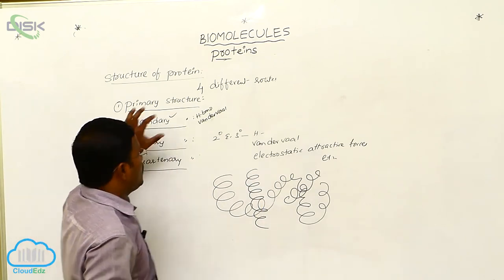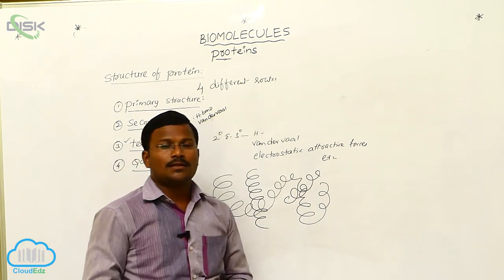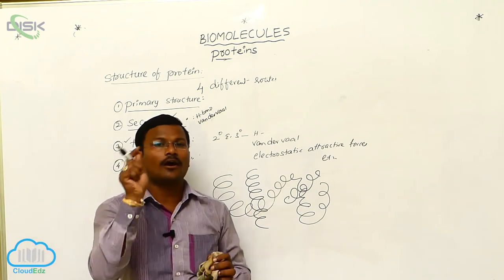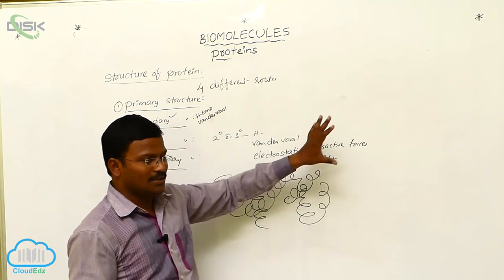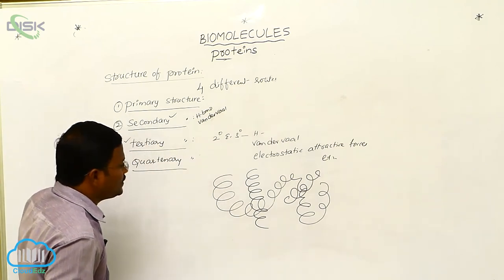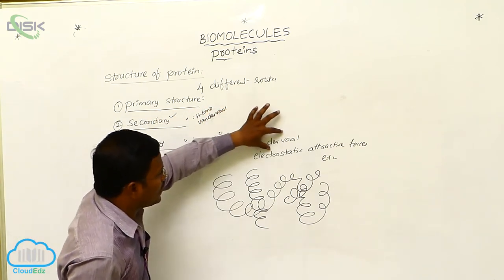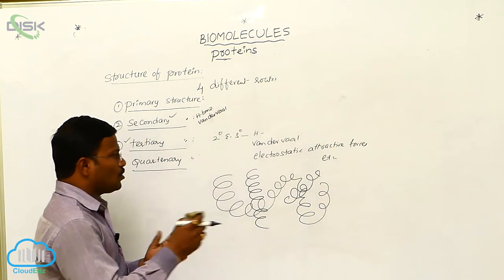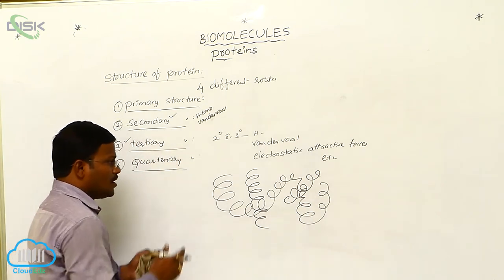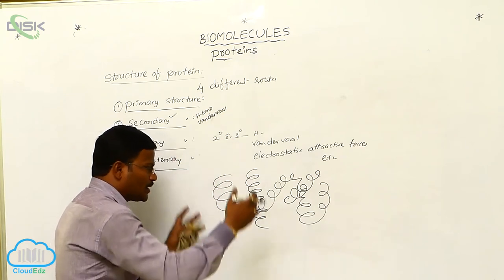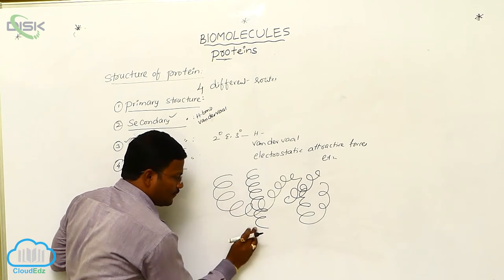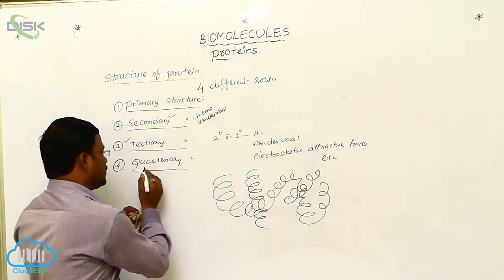In secondary structure, due to hydrogen bonding and van der Waals bonding, the protein presents with two different shapes: one is alpha helix coiling or spherical shape, and the second is beta pleated sheet type of structure. In tertiary structure, due to hydrogen bonding, van der Waals bonding, and electrostatic attraction, two or more polypeptides are attracted to each other. In quaternary structure, when two or more polypeptide chains are arranged together to form a protein, the spatial relationship between one polypeptide and another is explained.